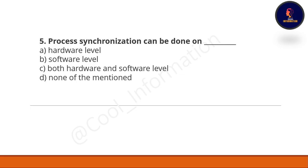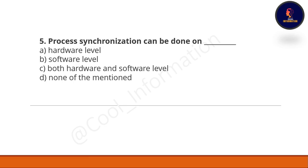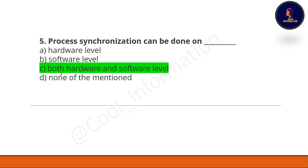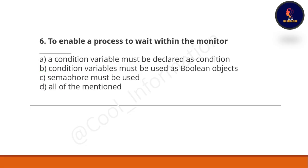Question 5: process synchronization can be done on which level? Option A: hardware level. Option B: software level. Option C: both hardware and software level. Option D: none of the above. The correct option is C — both hardware and software level.